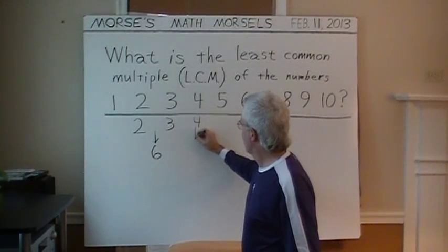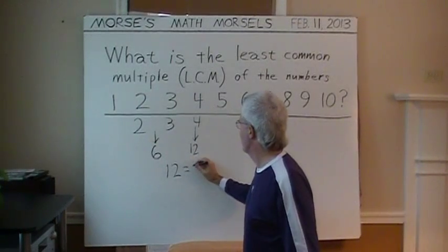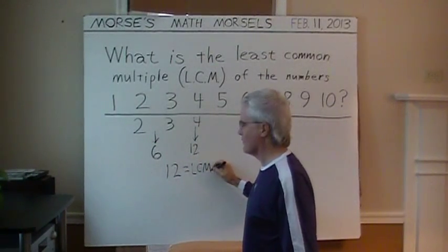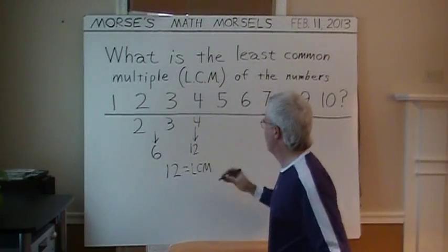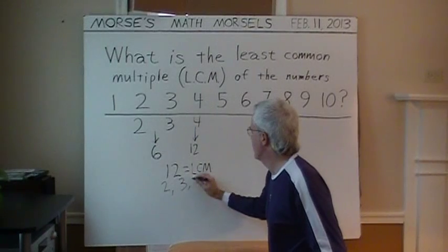So, 4 will lead to 12. And 12 equals their least common multiple. So far, so good. For 2, 3, and 4, that is.